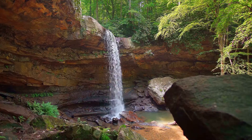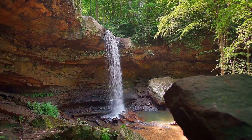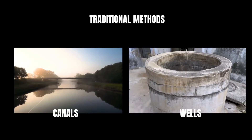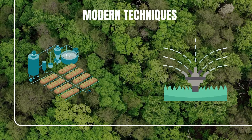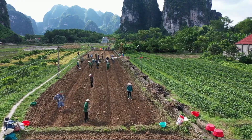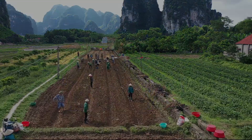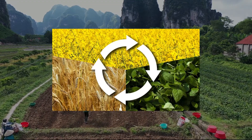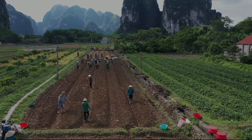Water management or irrigation is also crucial. Traditional methods like canals and wells are still used, but modern systems like drip irrigation and sprinklers help save water. Farmers also use different cropping patterns like mixed cropping, intercropping, and crop rotation to improve productivity and reduce the risk of crop failure.